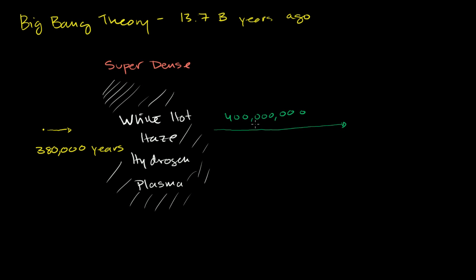is a pretty long, in fact, this is an unfathomably long period of time. 13.7 billion is really unfathomable, but already 400 million. Frankly, even 380,000 years is an unfathomable amount of time. But after 400 million years, you have the first stars.